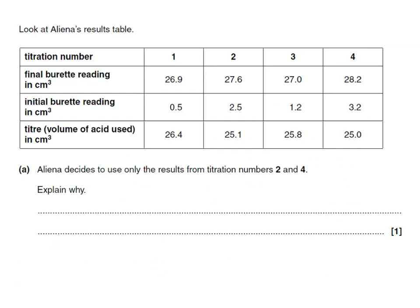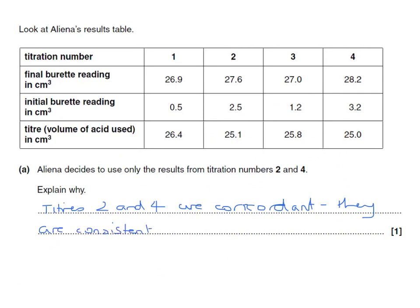Alina decides to use only the results from titrations 2 and 4. The results vary quite a lot overall, but titrations 2 and 4 are very close to each other. In scientific terms, titrations 2 and 4 are concordant — meaning they are consistent or close together — and we can assume these are the more accurate results.